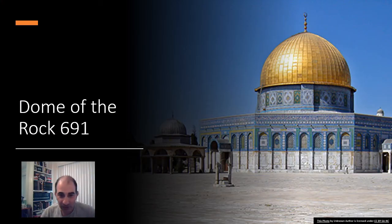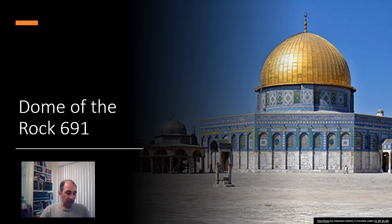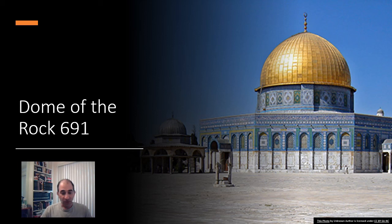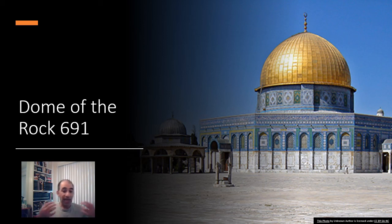One more bit of architecture under the Umayyad period: they were the ones who built the Dome of the Rock, which we talked about in the previous lecture. This was built in Jerusalem, right on top of Solomon's Temple. So as you can see, the Umayyads were pretty busy — they conquered a lot of area, had conflict with the Shiites, achieved remarkable architecture, and established important economic practices. The question now is: what happened to the Umayyads, and how did the Abbasids take over? We will talk about that in our next lecture.